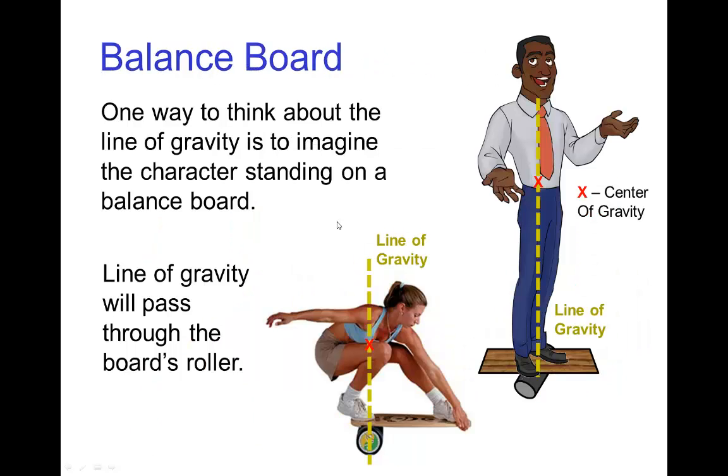Now one way to think about the line of gravity for a character is if you imagine the character standing on a balance board, which is a board that has a roller underneath it. When the character is in a balanced pose, then the line of gravity should go straight down through the roller.